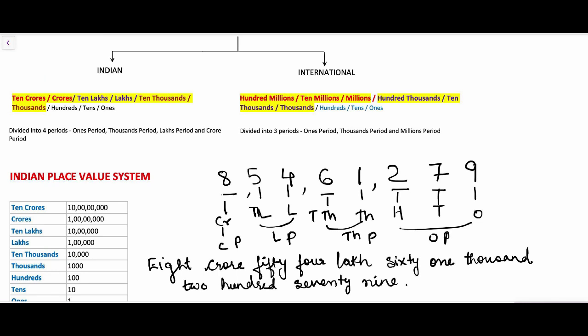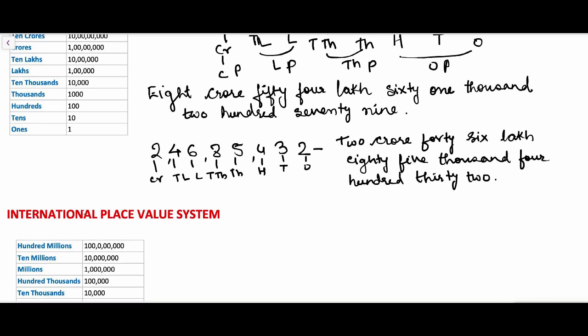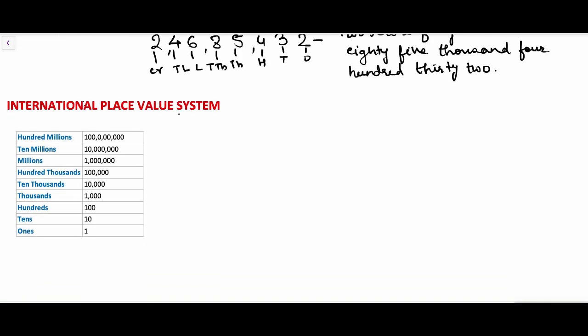Now let's see the international place value system. The international place value system is divided into three periods: ones period, thousands period, and millions period. The ones period has ones, tens, hundreds. The thousands period has thousands, ten thousands, and hundred thousands. In the Indian place value system we had the lakhs period, but here we have hundred thousands. The millions period has millions, ten millions, and hundred millions. Let's see with one example.